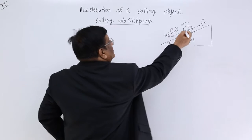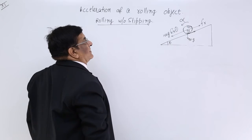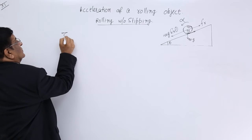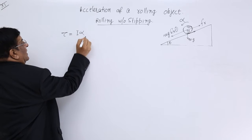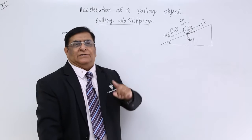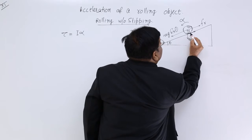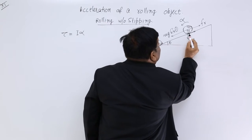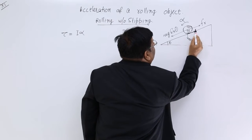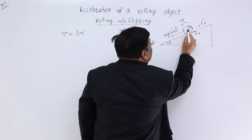Suppose the body is rotating with an angular acceleration alpha. Then what is the torque acting on this body? Torque is equal to I into alpha. There is another method of calculating torque, that is force into distance from the point of rotation. There is a force of friction acting backward at the contact point.